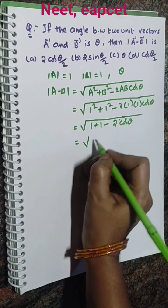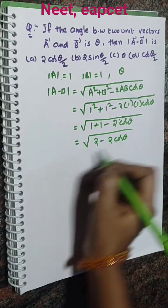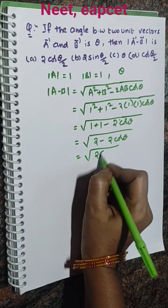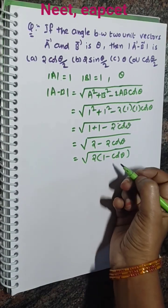So this implies we can get 2 minus 2 cos theta. So we get 2 times (1 minus cos theta).